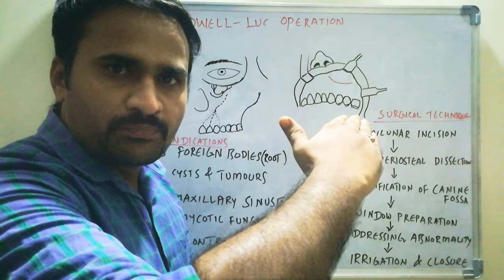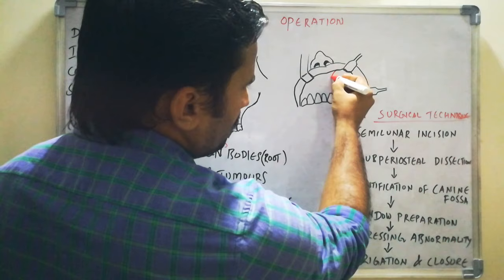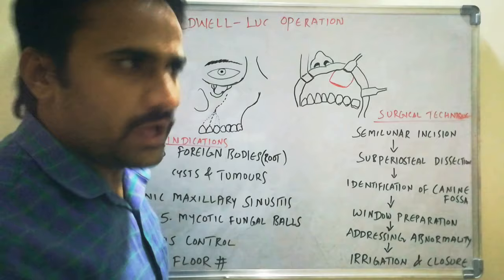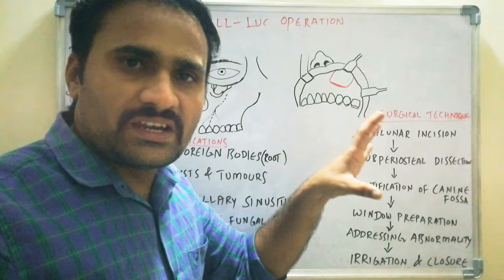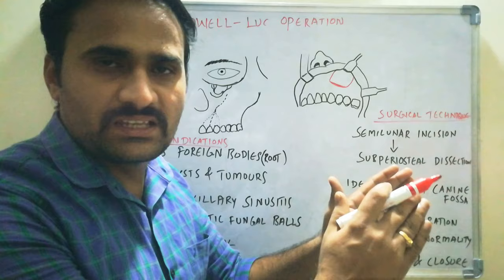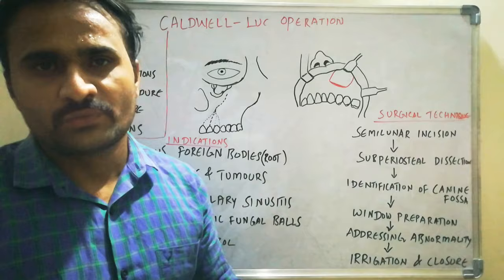After elevating the Mucoperiosteal Flap, the anterolateral wall of the Maxillary Sinus is exposed. The wall facing towards us is the anterolateral wall of the Maxillary Sinus, where the Canine Fossa is located. Once you have completed the Subperiosteal Dissection, the next step is identification of the Canine Fossa.